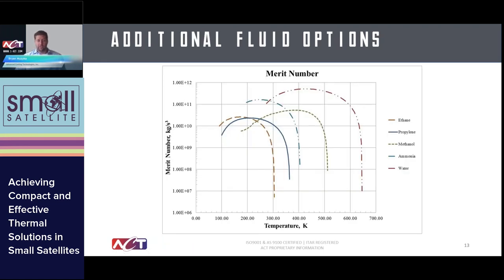Before moving away from heat pipes, there are many different fluid options. We actually manufacture liquid metal heat pipes up to 800°C. In the space realm, the typical fluids include ammonia and water, which we've covered at length. The MERIT number is a well-known heat pipe figure of merit that predicts performance based primarily on fluid properties — water and ammonia are near the peak for their respective temperature ranges. For lower temperature ranges, ethane has been used. Methanol also provides a less capable option than water for component-level cooling if you don't want to worry about freezing, though performance will be lower.